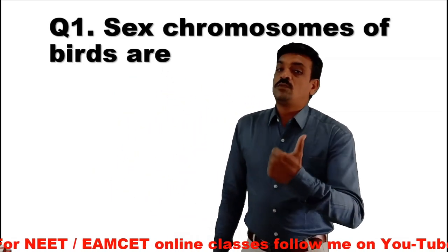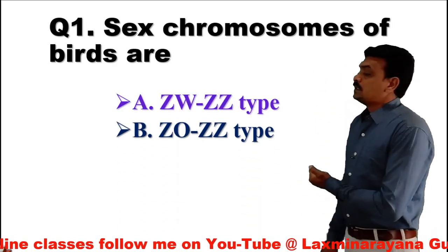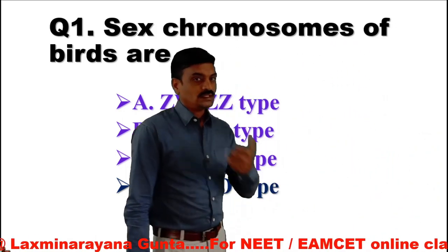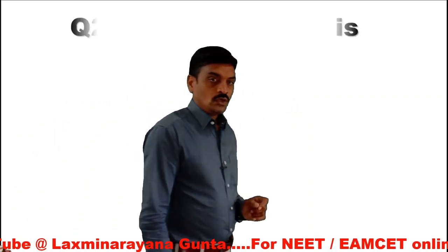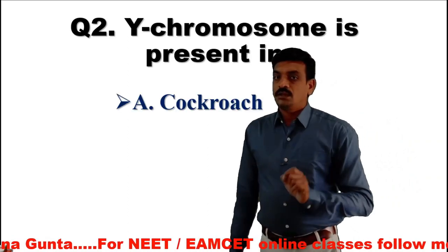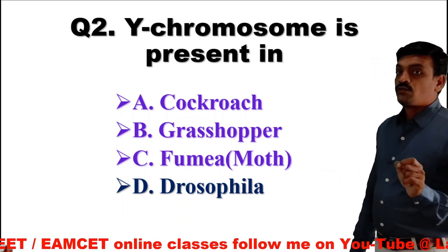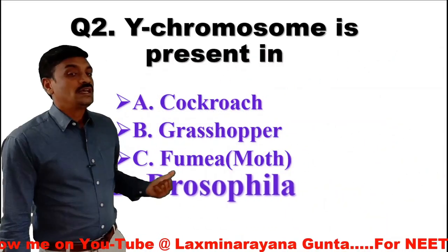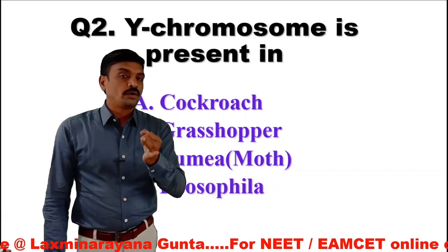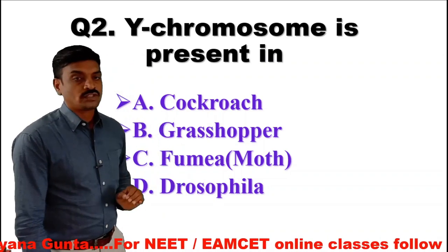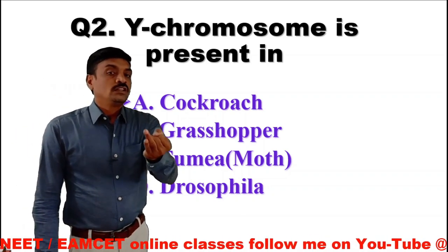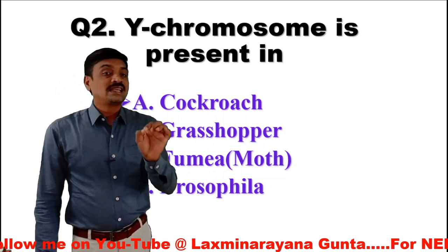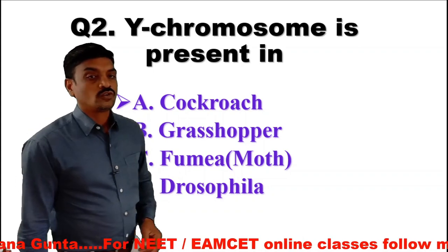Let us finish the session with a few questions. First: the sex chromosomes of birds are — ZW/ZZ type, Z0/ZZ type, XX/XY type, or XX/X0 type? The answer is ZW/ZZ type. Second: Y chromosome is present in — cockroach, grasshopper, moth, or Drosophila? Drosophila is the right option, because cockroach and grasshopper show XX/X0 type sex determination (no Y chromosome), and moth shows Z0/ZZ type (also no Y chromosome), whereas Drosophila has XX/XY type sex determination.